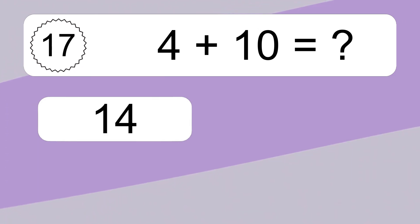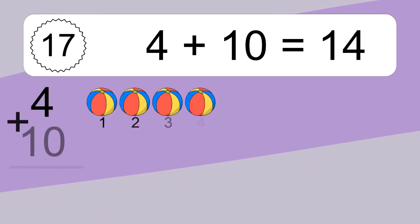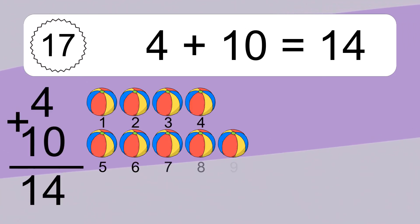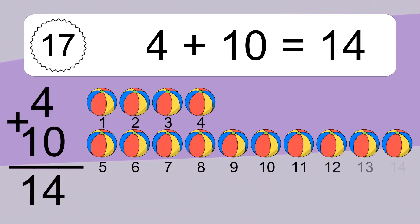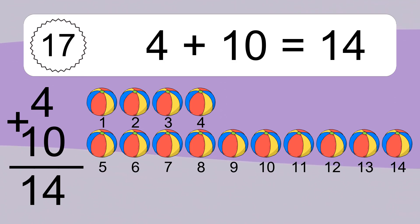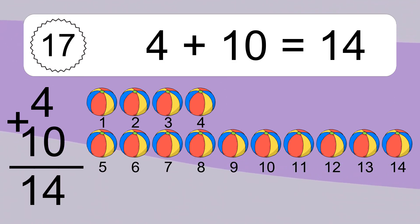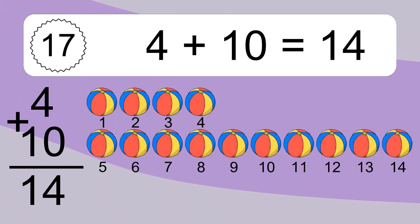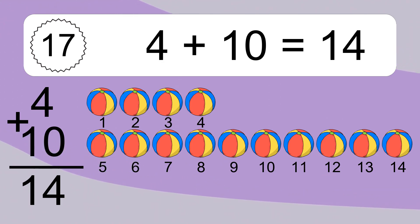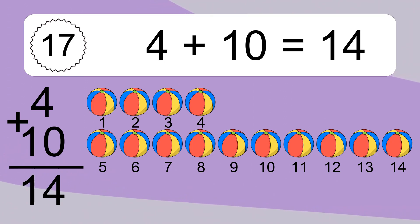4 plus 10 equals what? 4 plus 10 equals 14. Let's count it. 1, 2, 3, 4, 5, 6, 7, 8, 9, 10, 11, 12, 13, 14.